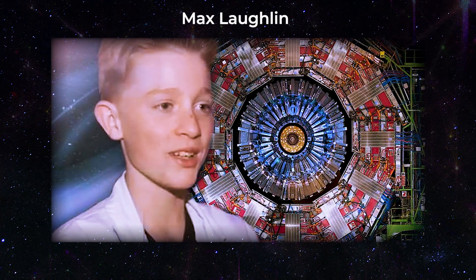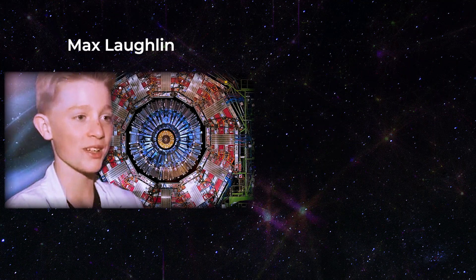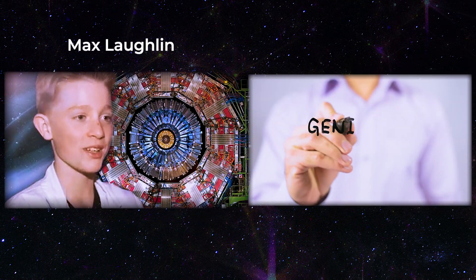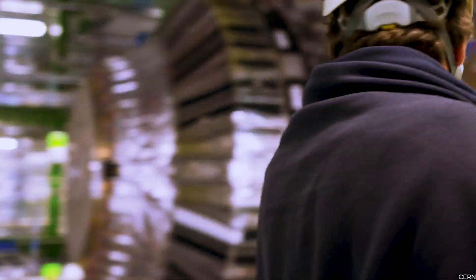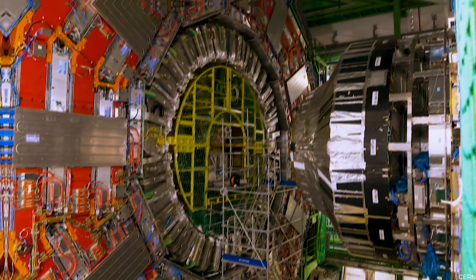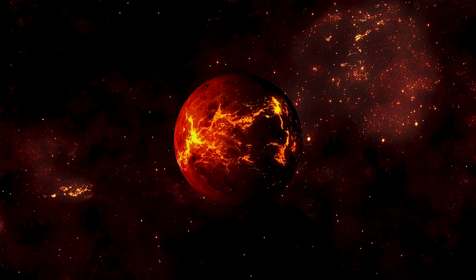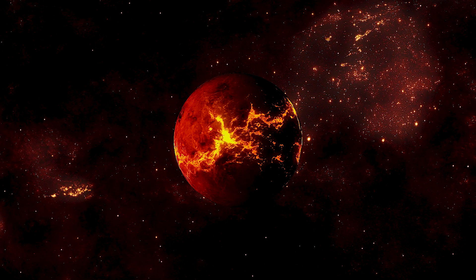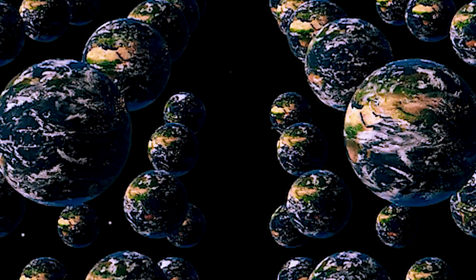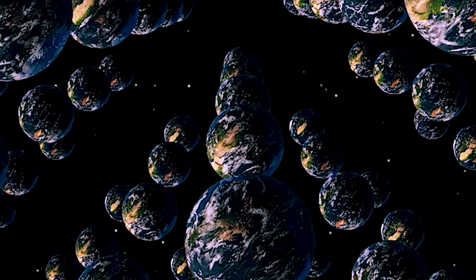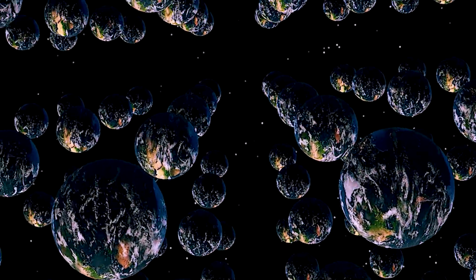Max Loughlin, dubbed the smartest kid in the world and considered a juvenile genius, astounded the world with his exceptional academic ability. The young genius has made various assertions that have piqued the scientific community's interest, the most frightening of which is about CERN and how it may have ruined our universe. Max claims that CERN destroyed our world and that we are now in a parallel universe similar to the previous one.